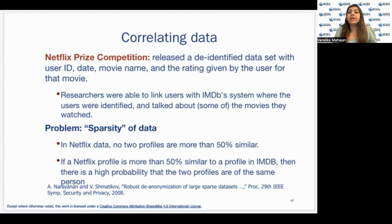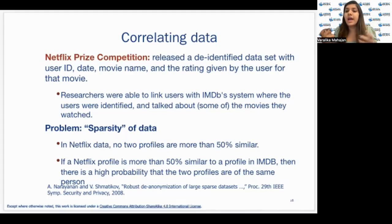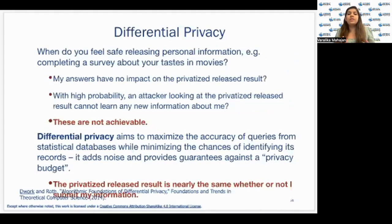Netflix, in a prize competition, revealed a dataset where they de-identified their users — they just gave user IDs, date, movie name, and the rating given by the user for that movie. Netflix thought this data was anonymous and nobody could identify who the user was. But the problem was the sparsity in Netflix data. In Netflix data, no two profiles are more than 50% similar. If a Netflix profile is more than 50% similar to a profile in IMDb, then there is a high probability that the two profiles belong to the same person. IMDb made use of this and started identifying users and talking to them about the movies they had watched. This was a big breach of data privacy.